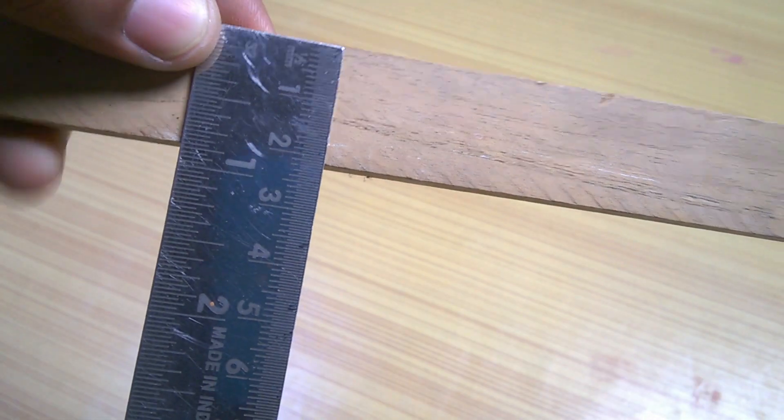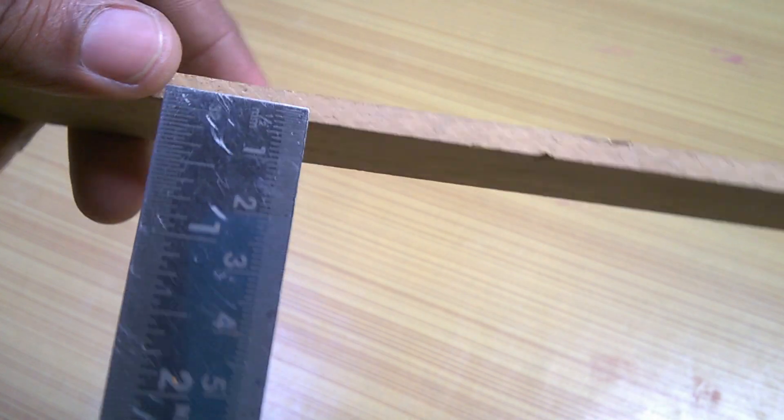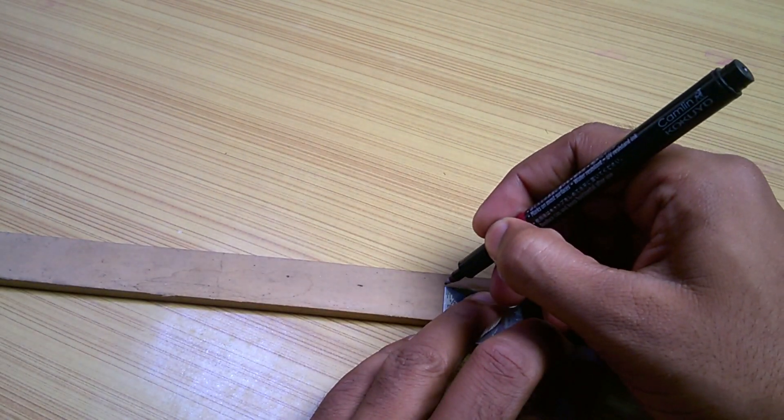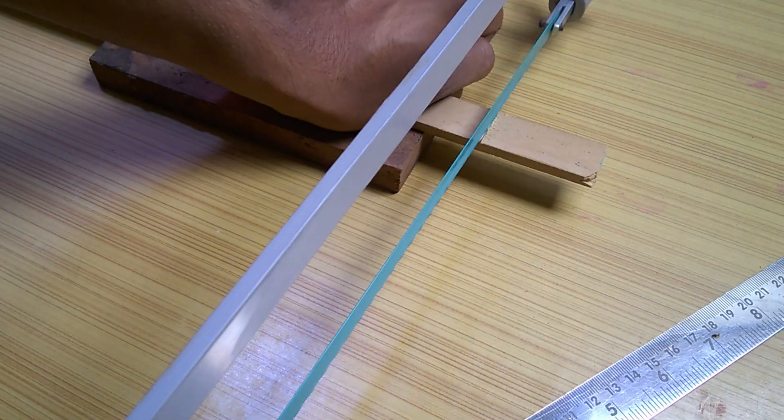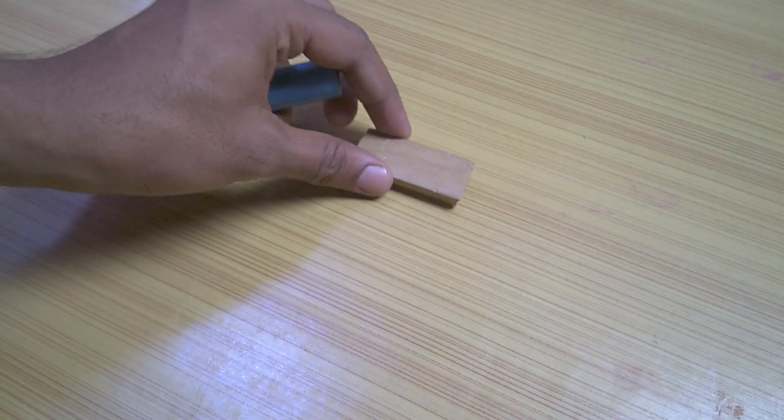For the ease of soldering, I decided to make a battery holder. For that, I took a wood piece 2cm wide and 5mm thick. I marked two inches from one end and cut it using a hack saw. After then, I repeated the process five times to get wood pieces like this.